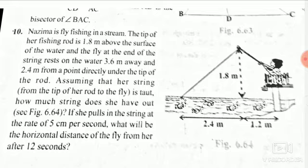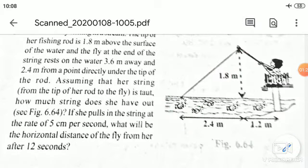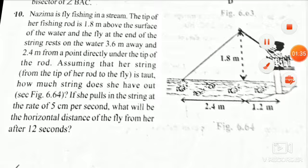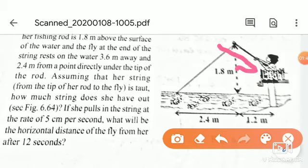Assuming that her string from the tip of her rod to the fly is taut, how much string does she have out? If she pulls the string at the rate of 5 centimeters per second, in this direction, which is 5 centimeters per second.